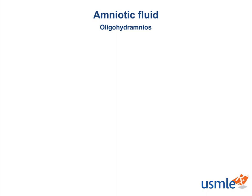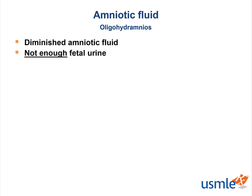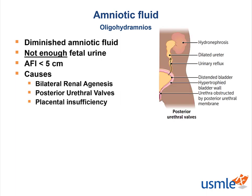On the other hand, we have oligohydramnios. This is where there is diminished fluid to cushion the growing fetus — basically, too little fetal urine — typically with an amniotic fluid index less than 5 cm. Since amniotic fluid is mostly made up of fetal urine, it makes sense that problems such as bilateral renal agenesis and posterior urethral valves can lead to this phenomenon. Placental insufficiency can also be the culprit.